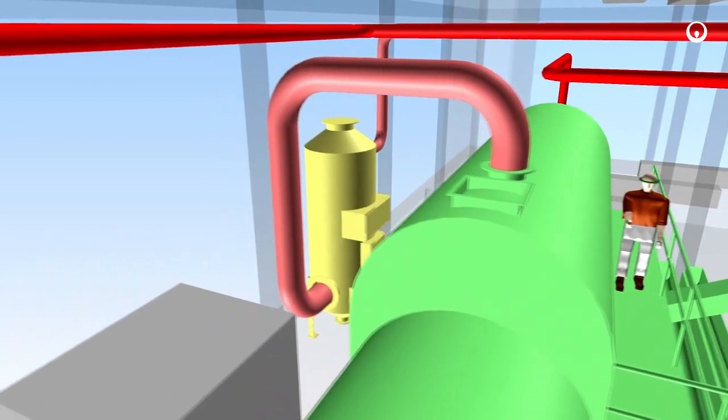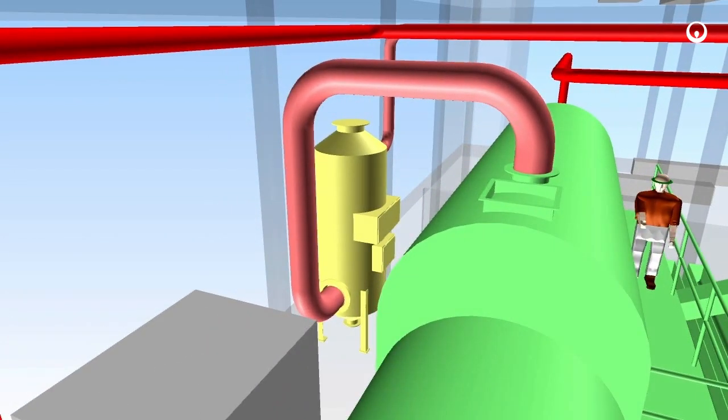Moisture-laden vapor from the dryer passes through a scrubber-type condenser where the vapor is cooled and the vapor condensate is removed and sent to the head of a plant.